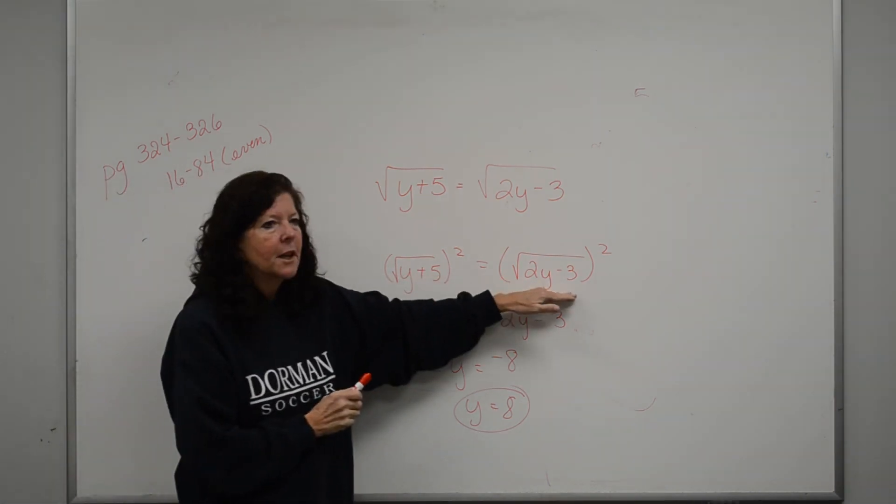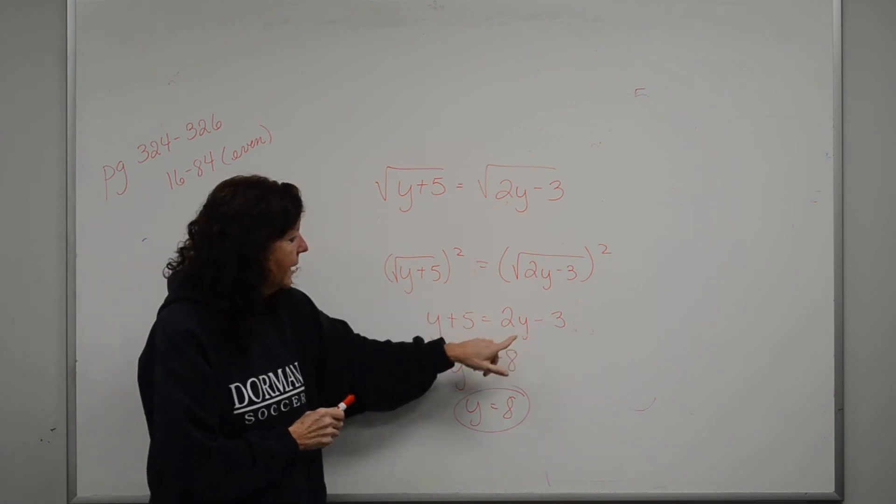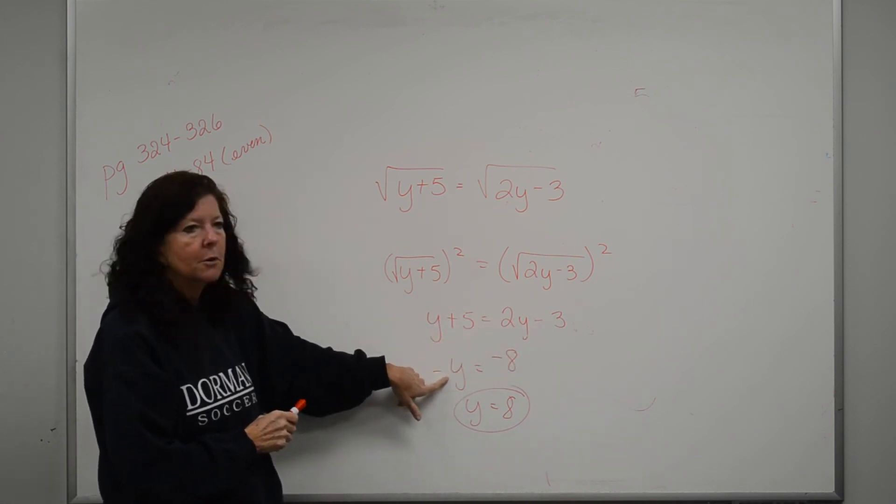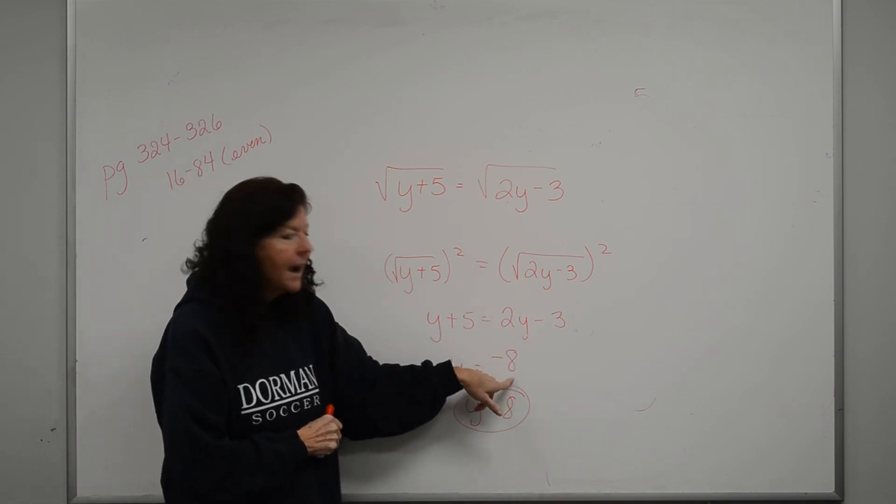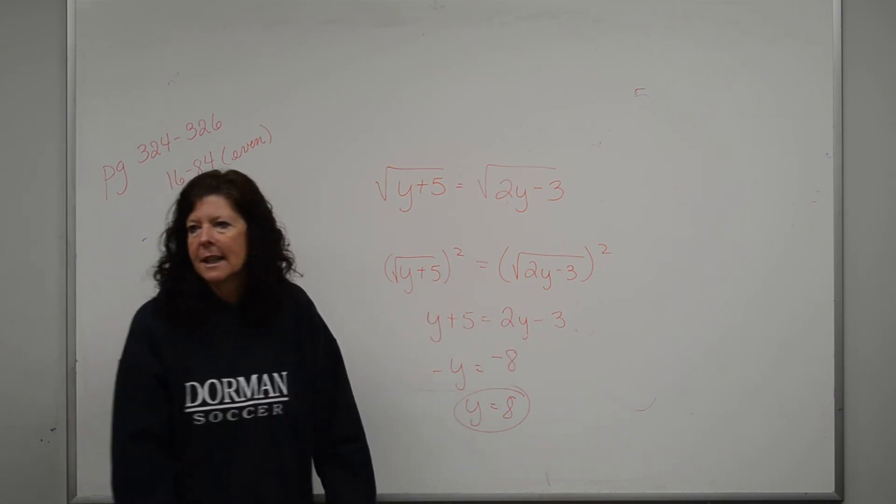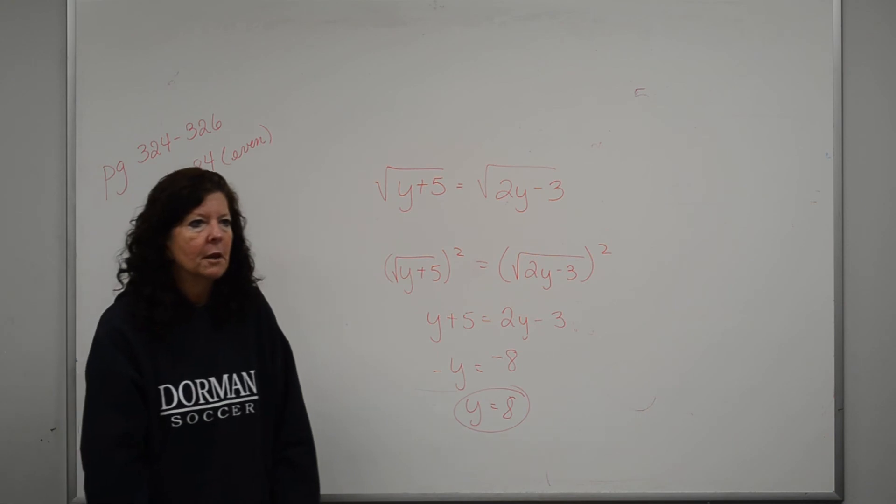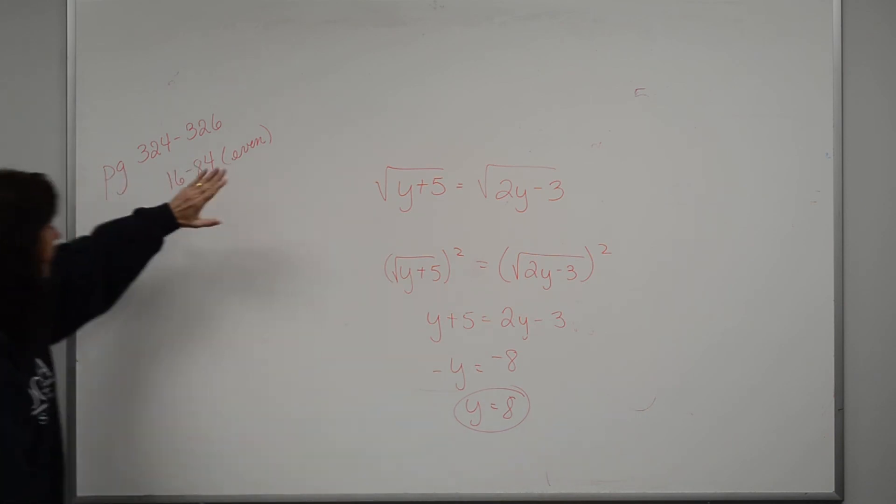You squared both sides to get rid of the square root, which left you here. When you subtracted the 2, you got it 2y. You got a negative y. When you subtracted the 5, you got a negative 8. Well, then you're going to take the opposite of both of them since they're both negative. Okay. Look. Okay. Here's your homework.